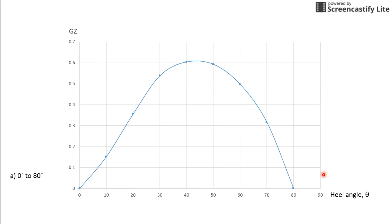And part B, they ask you to find the maximum GZ and the angle at which it occurs. So, this is just to say that you are supposed to find the maximum point on the curve itself. So, in this case, this is the maximum point of the curve. And the answer will be 0.603 at 40 degrees.